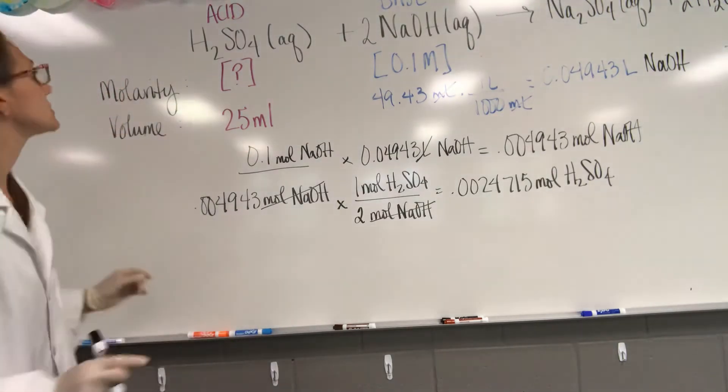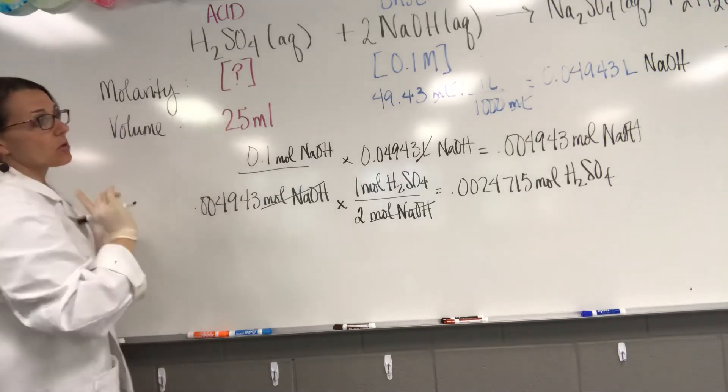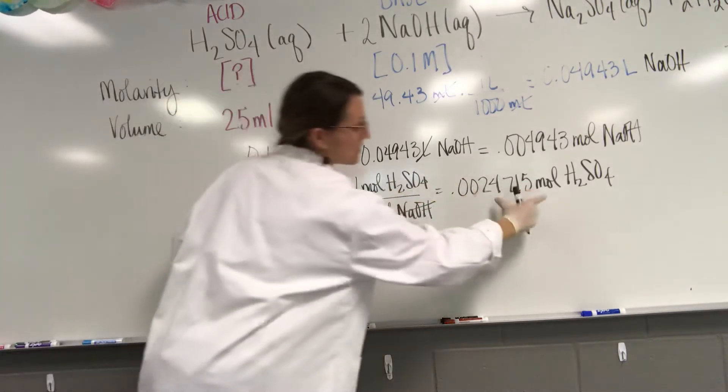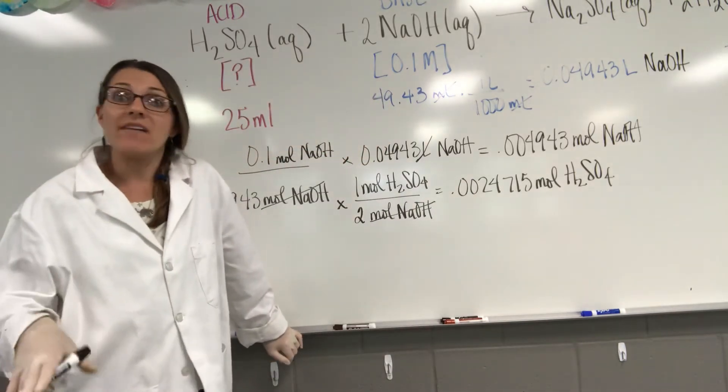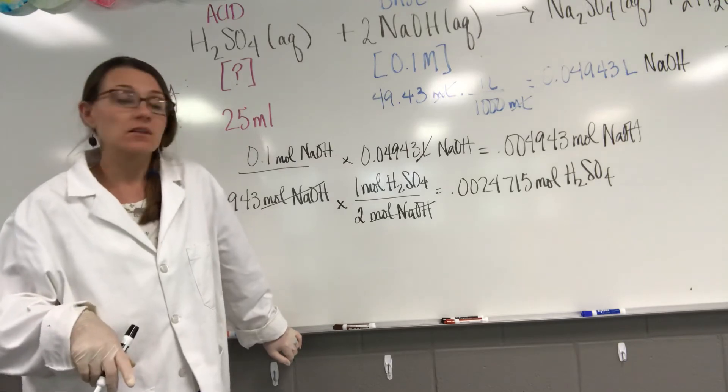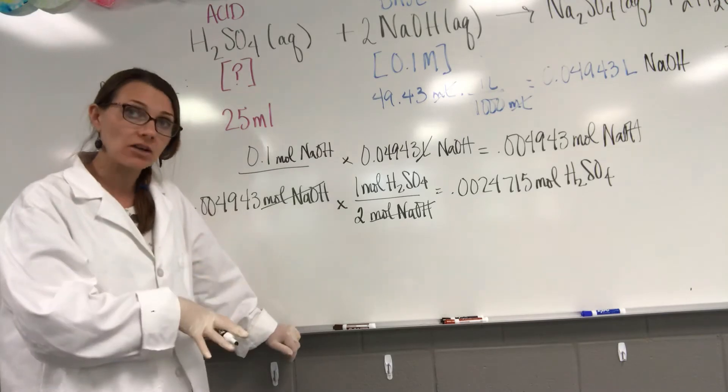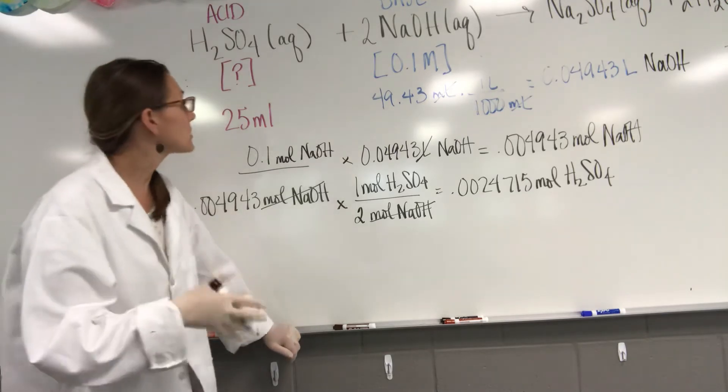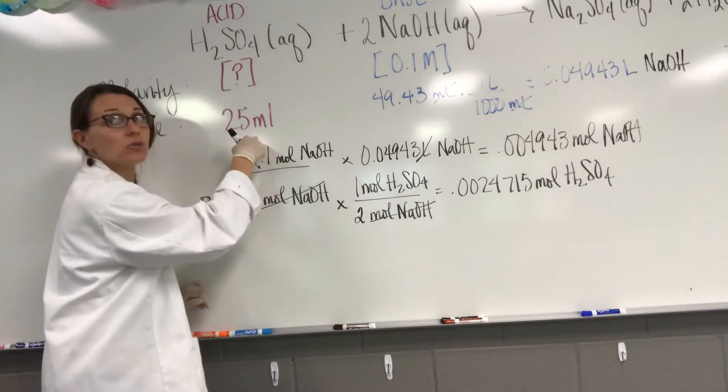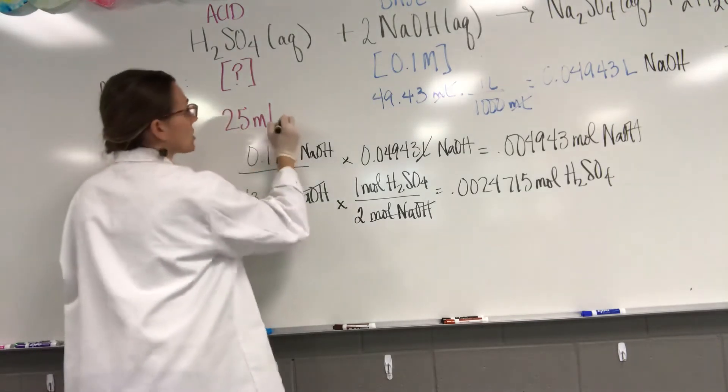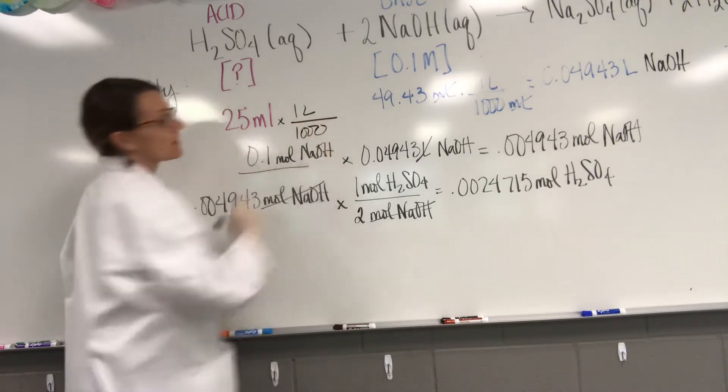Now what are we actually trying to figure out? We're trying to figure out molarity. So I've figured out the moles, so what do I not have? I don't have the volume. Remember that molarity is mole over liter. So what I'm going to do now is I'm going to take that 25 milliliters that was the volume of sulfuric acid that we had and I'm going to go ahead and convert that to liters.